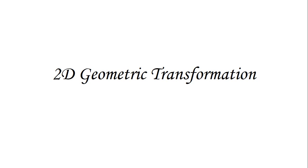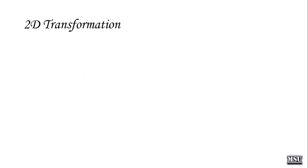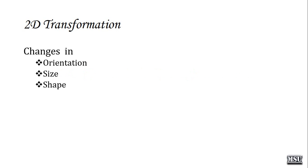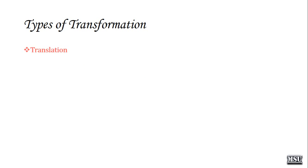We are discussing 2D geometric transformation. In the last session, we discussed how to perform translation. We already know that transformation means changing any object's orientation, size, or shape. Translation, scaling, and rotation are basic transformations. Reflection and shearing are advanced transformations.